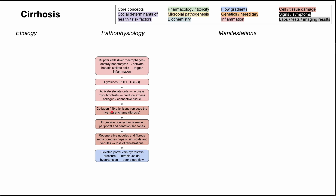When you have so much collagen and fibrotic material in the liver, it starts to replace the normal liver parenchyma — this is the process of fibrosis. When you have so much connective tissue in the periportal and centrilobular zones, you'll have regenerative nodules and fibrous septa that start to compress the hepatic sinusoids, and you'll lose the normal fenestrations in the liver.